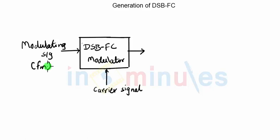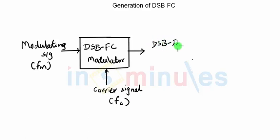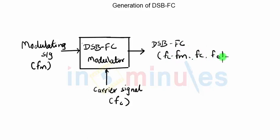The second signal we are using is the carrier signal, which will have the frequency FC — the carrier frequency — which will be a high frequency. The output of the DSBFC modulator is the DSBFC signal, which will have frequencies starting from FC minus FM, to FC, to FC plus FM, forming two sidebands and the carrier. This is why it is called double sideband full carrier.